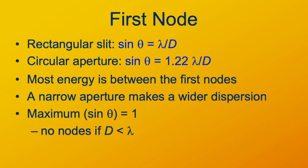So here's what we come up with. For a rectangular slit, the first node shows up at the angle theta such that sine of theta equals the wavelength divided by the slit width.